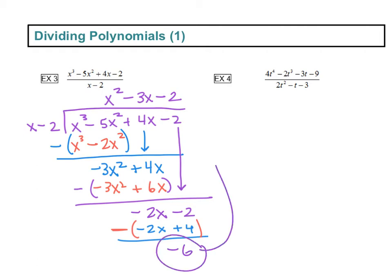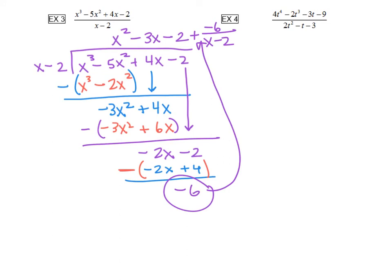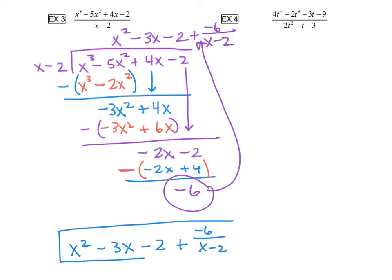So this is our remainder. We're going to say plus, then negative 6 over whatever we were dividing by, which was x minus 2. So our final answer — let's rewrite it away from the problem so we're nice and organized — is x squared minus 3x minus 2 plus our remainder of negative 6 over x minus 2. The answer seems really weird, but that's okay — it's correct.